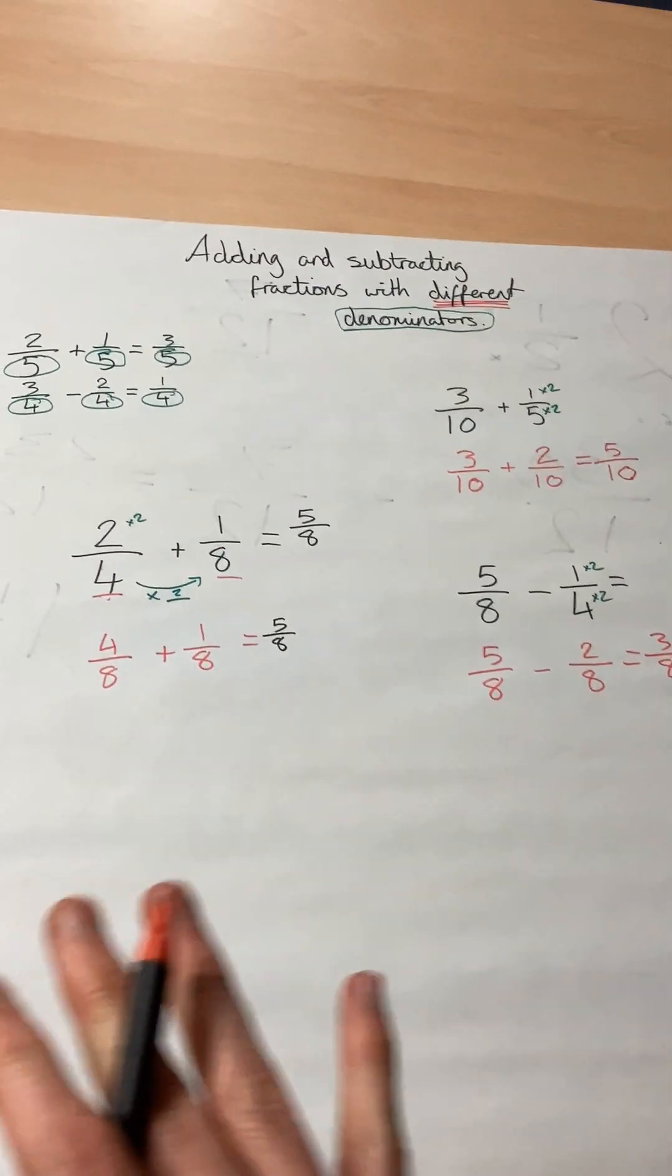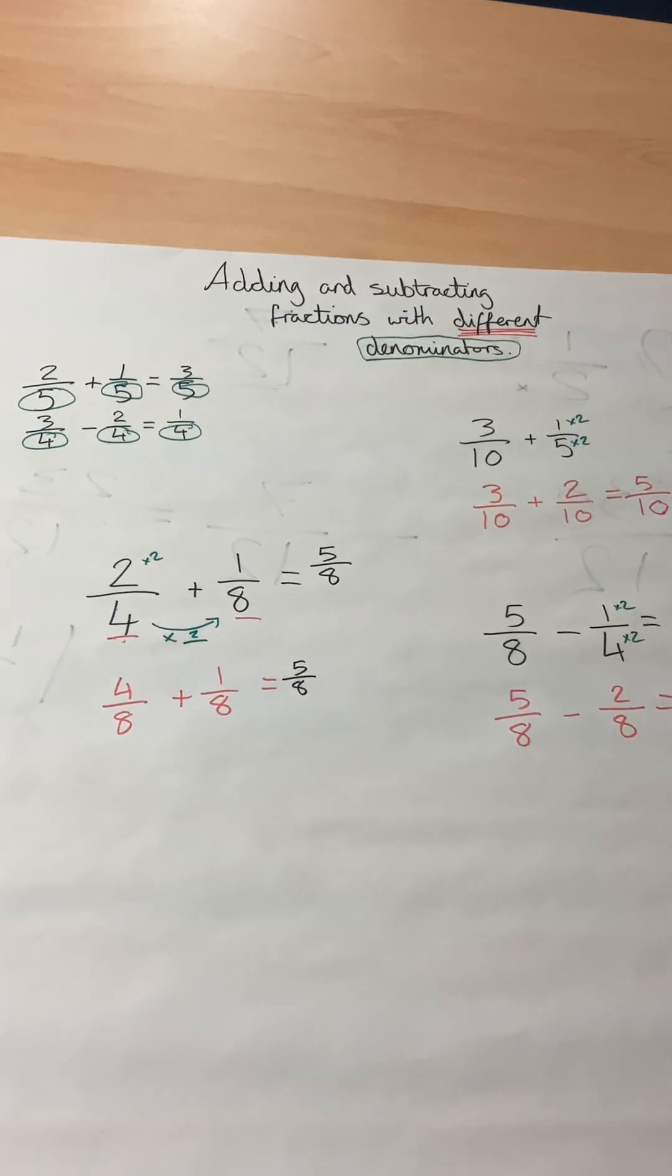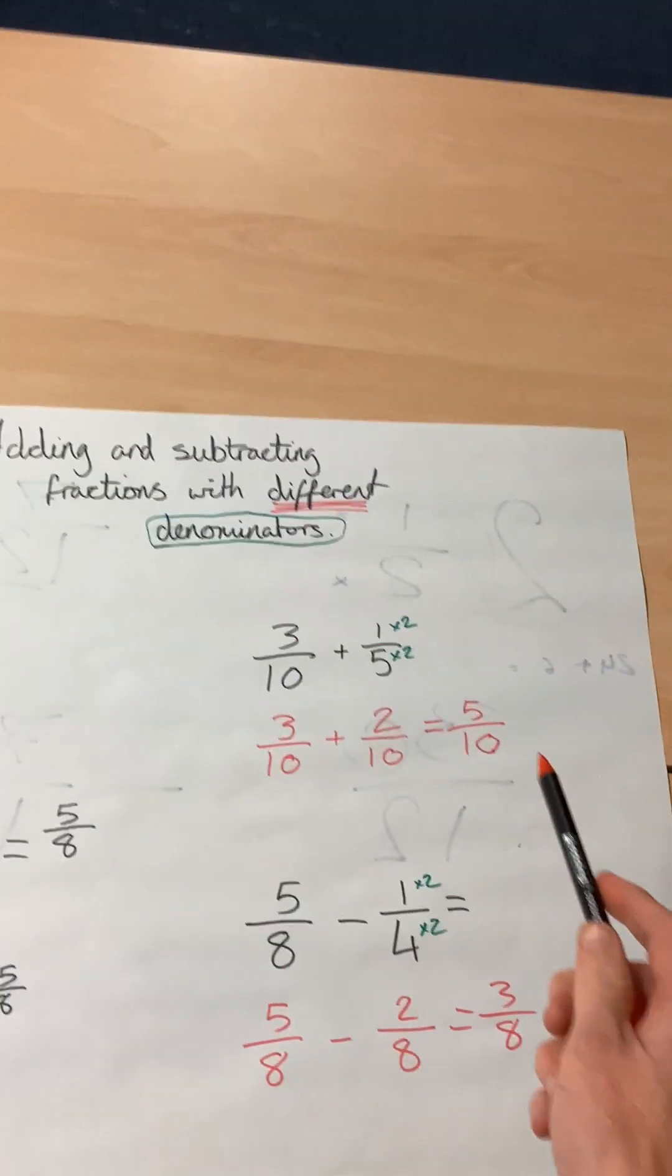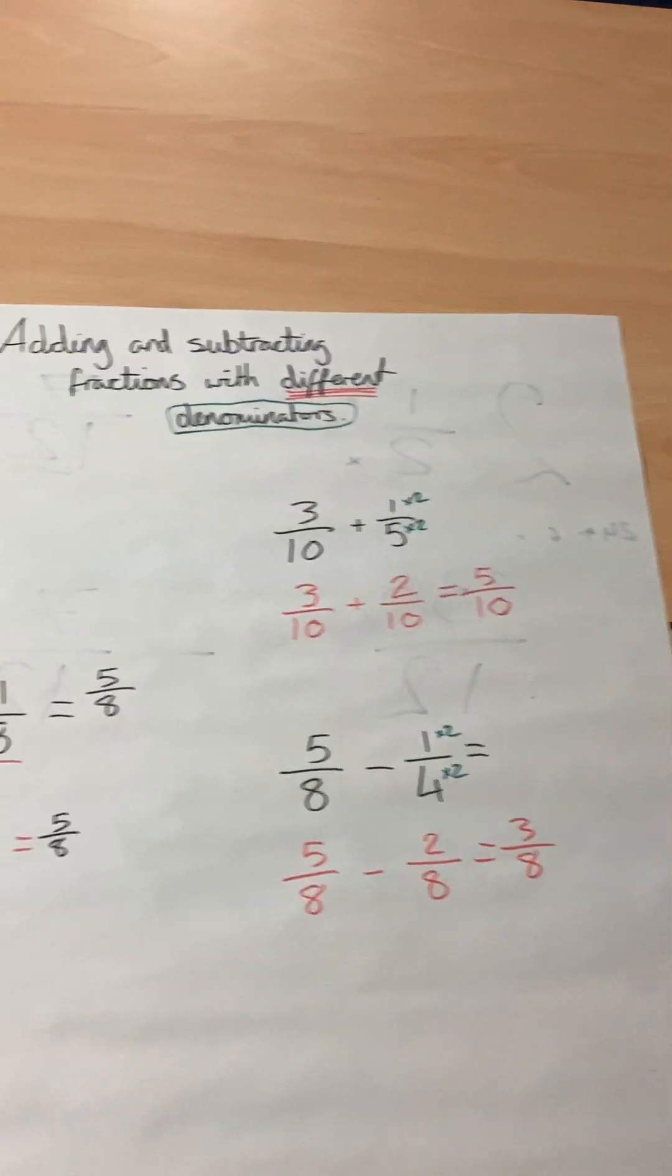So if they're not the same on the bottom, if they have different denominators, make them the same by finding the equivalent fraction and rewrite your question to make it easier for yourself.